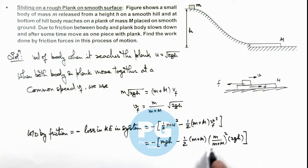And here if we further simplify, the final result we are getting is m by m plus capital M times gh, with a negative sign so this will be the final answer for this problem.